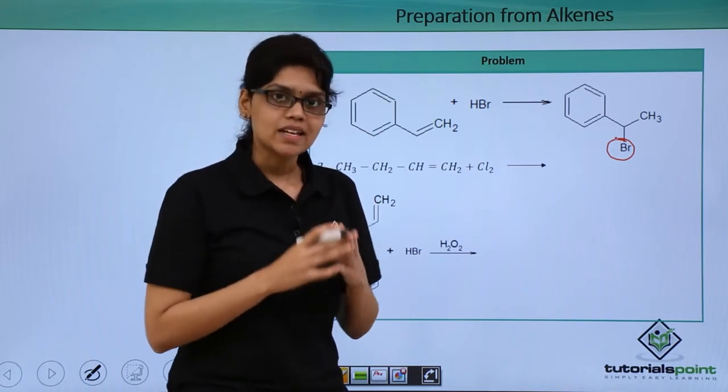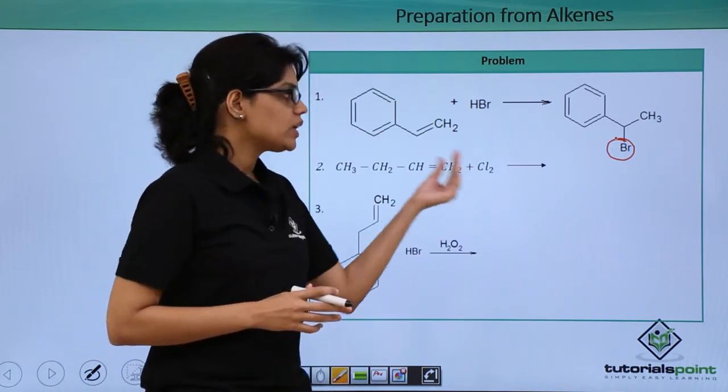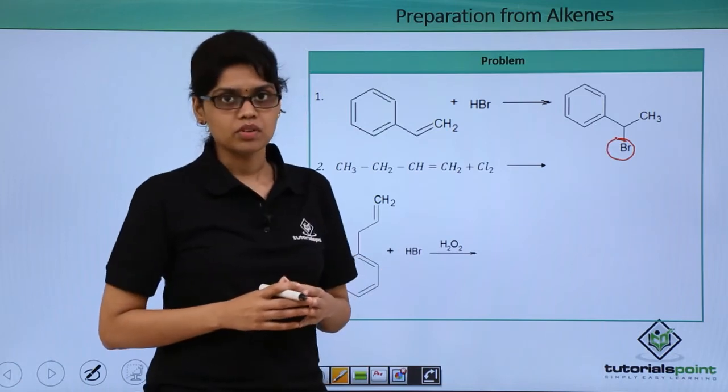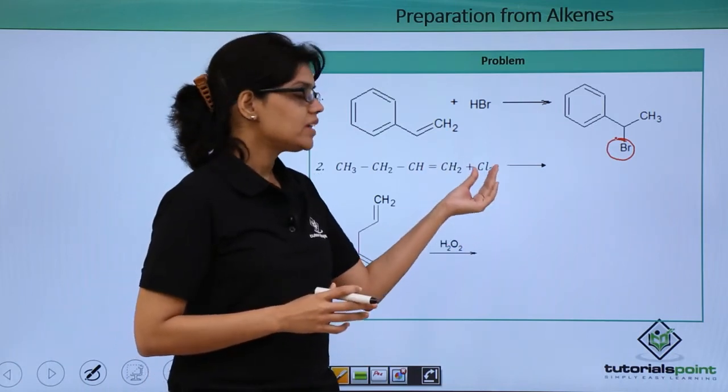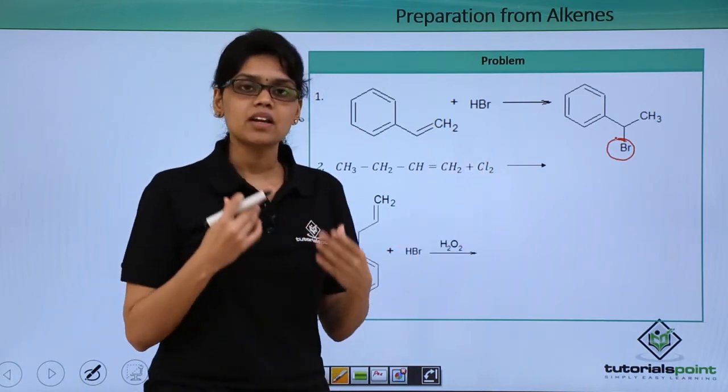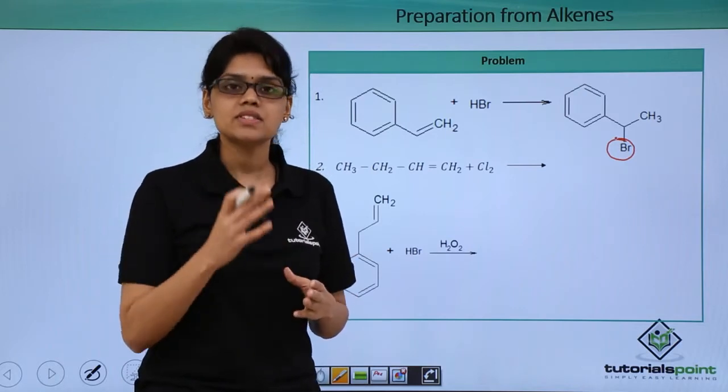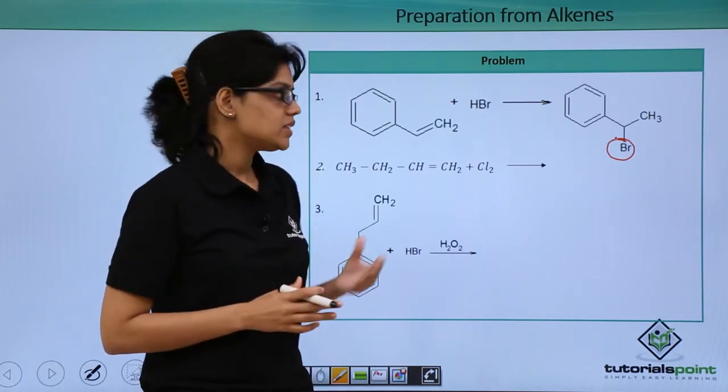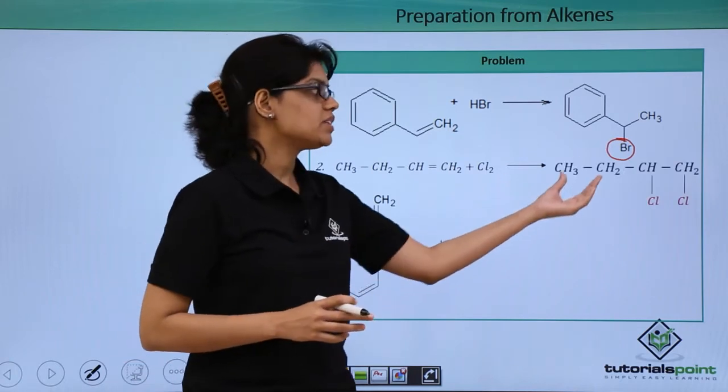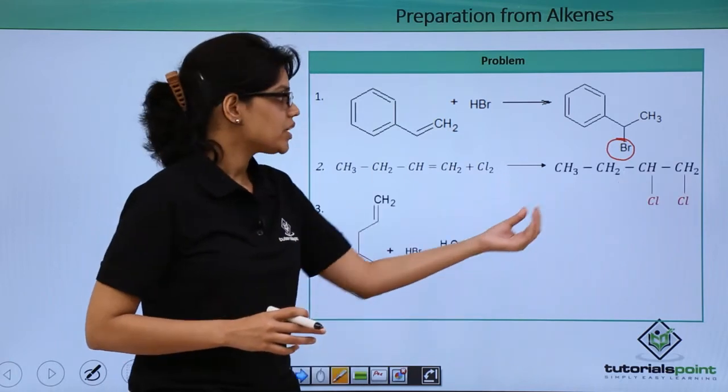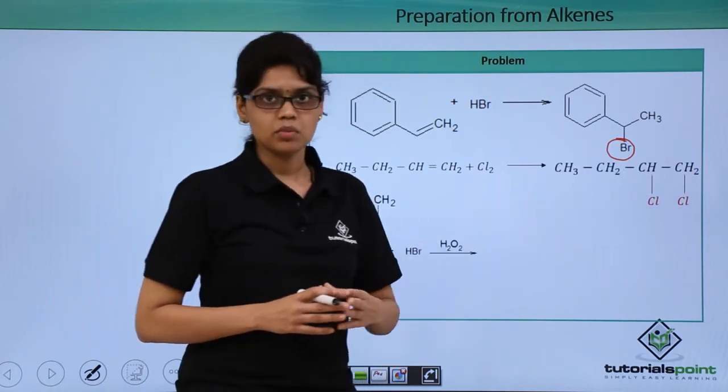Let us now look at the second reaction where chlorine atom or the chlorine is being added to the double bond. So when we are adding halogen across the double bond, the final product that we get is a vicinal dihalide. So in this case as well, the final product that we get is a vicinal dichloride where chlorine has been added across the double bonds here.